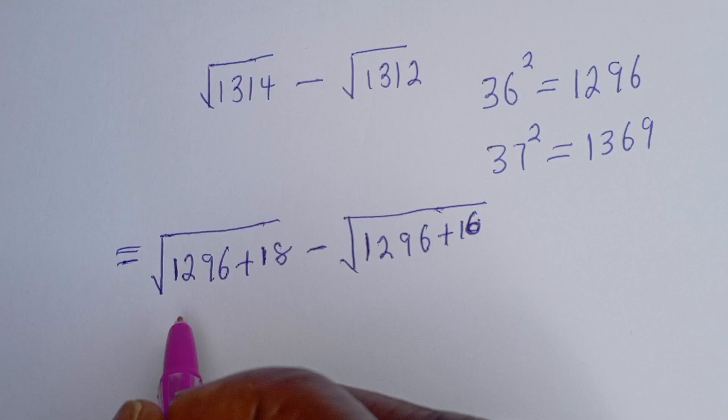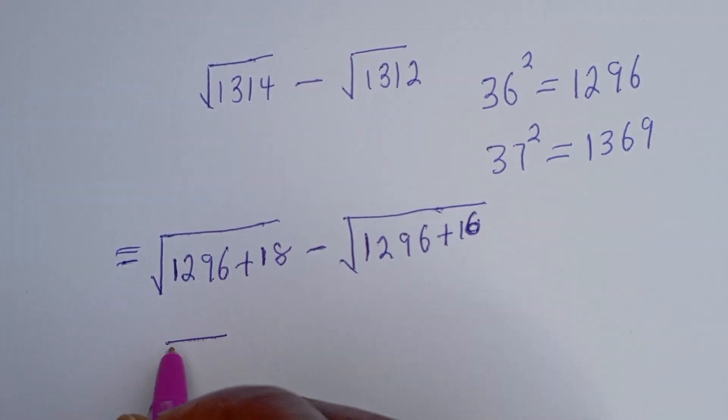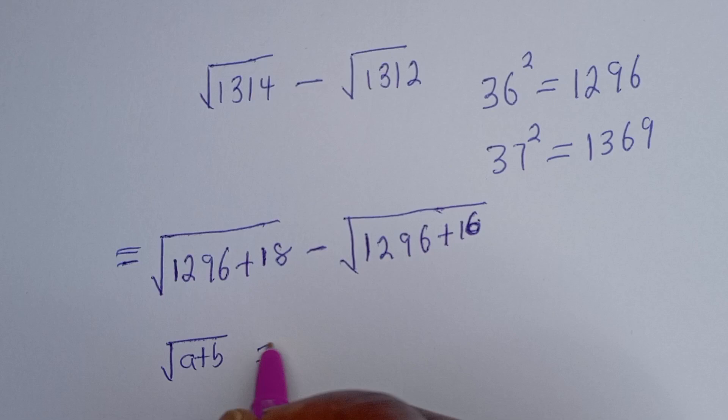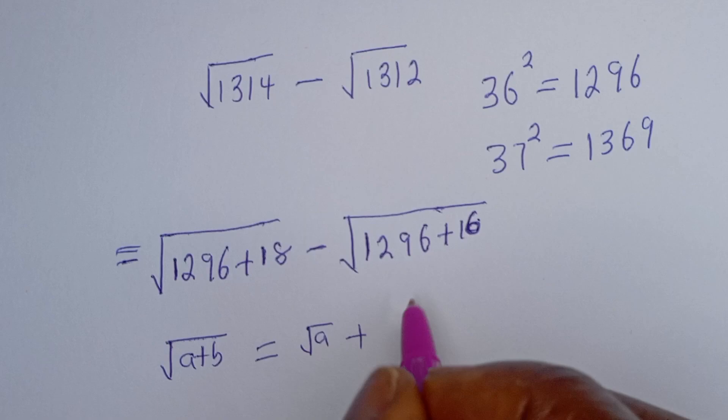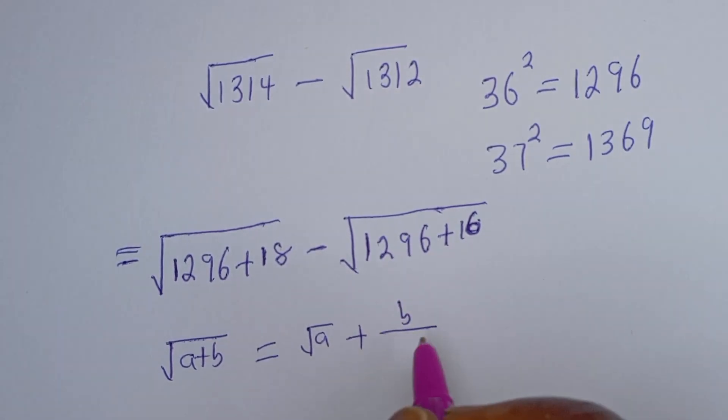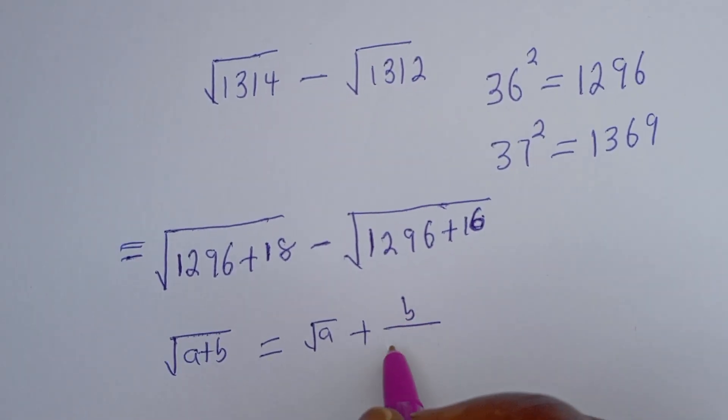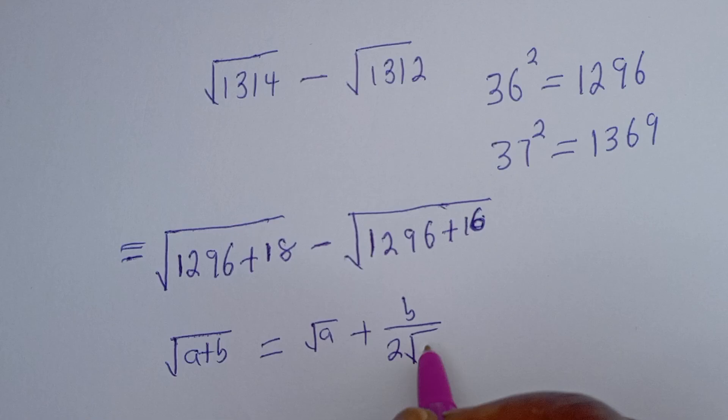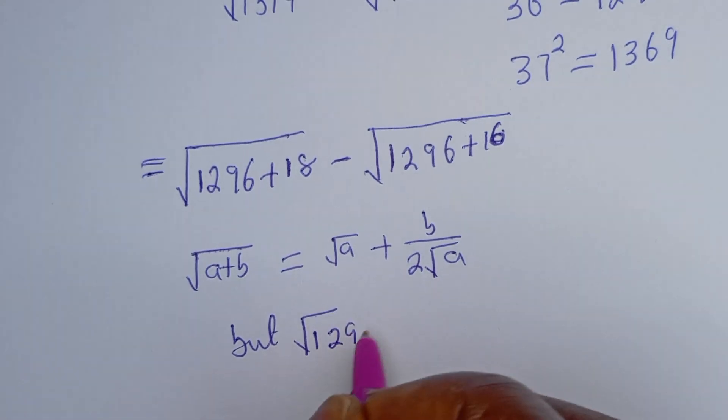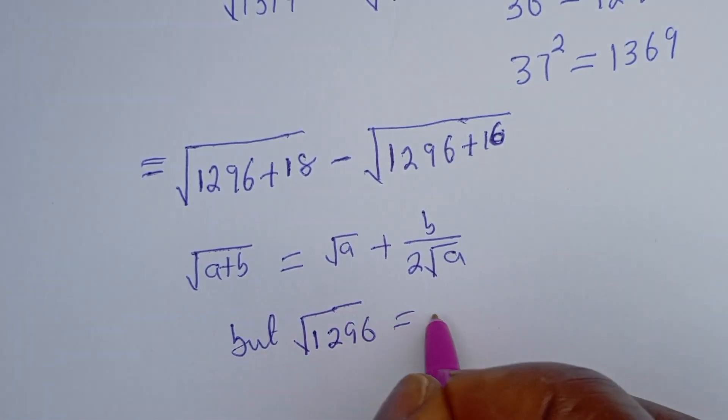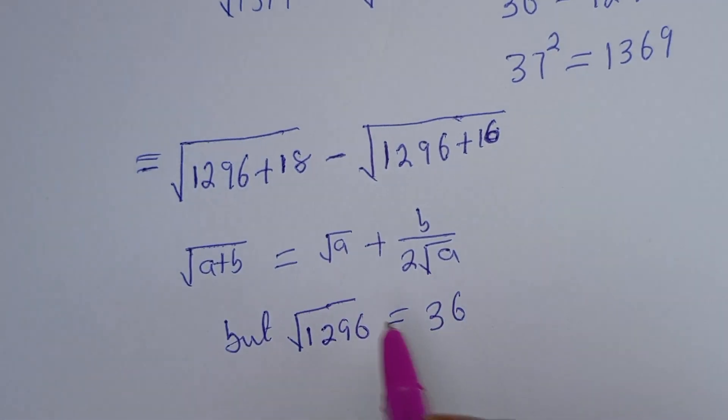Take note that if you have square root of a plus b, this is equal to square root of a plus b over 2 root a. But root 1296 is equal to 36.